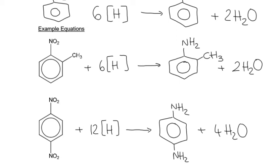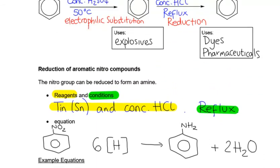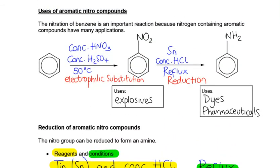The reduction of an aromatic nitro group to make an aromatic amine is how we would prepare aromatic amines. In the amines pack, we looked at preparing aromatic versus aliphatic amines, and these are our aromatic amines. This synthetic pathway from benzene to a nitro compound to an amine is quite a common exam question, so make sure you're familiar with all the steps — you can outline the mechanism for the first part and the equation for the second part.